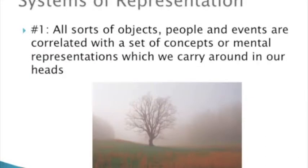Hall says that there are two systems of representation involved in the processes of representation and communication. The first is a system by which all sorts of objects, people, and events are correlated with the set of concepts or mental representations which we carry around in our heads.